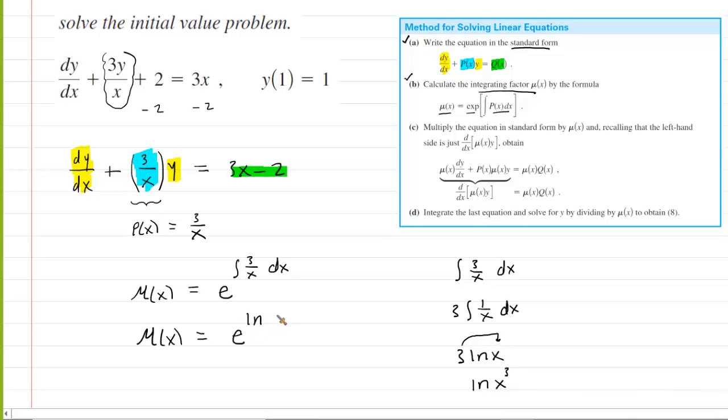That's a basic logarithm property. So here we have our integrating factor μ(x) is equal to e raised to the ln of x cubed. And what's nice here is we have the exponential function and the natural log function, which are inverses. So they cancel. And this leaves us with the μ(x) equaling x cubed. So that's our integrating factor.